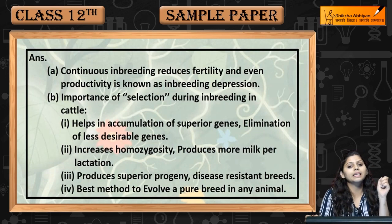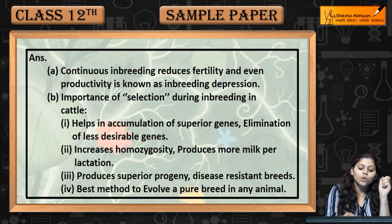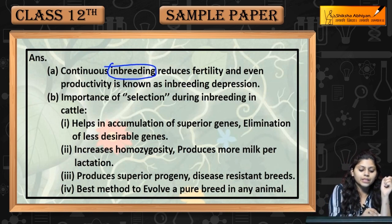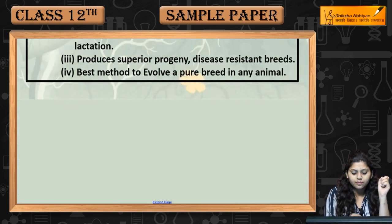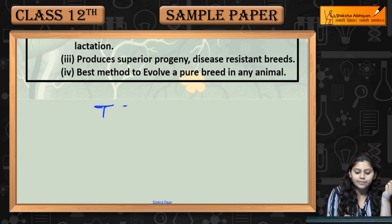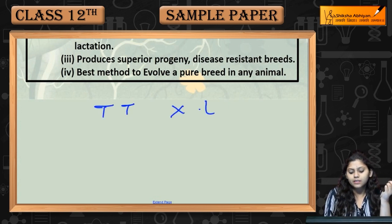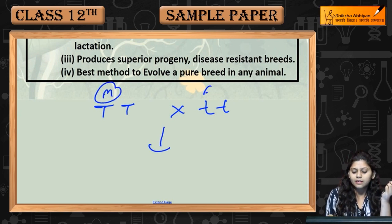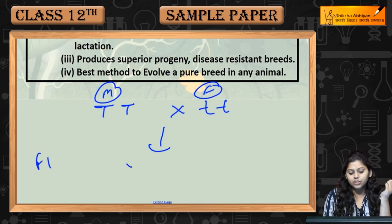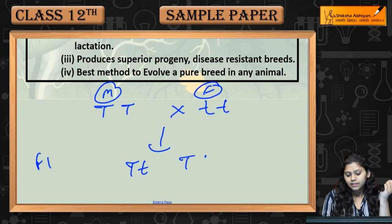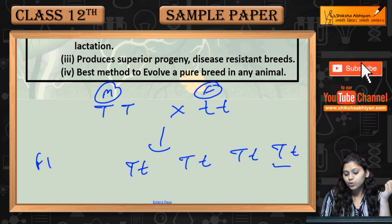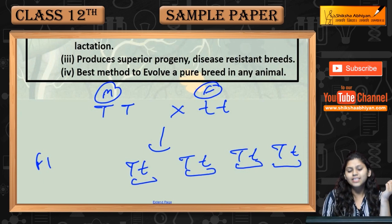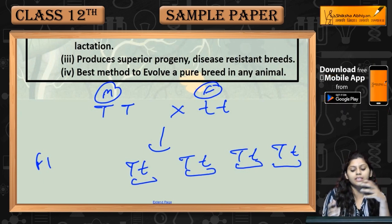What is inbreeding depression? Consider two parents with genotype tt. This male and this female are crossed, and the first generation gives tt, tt, tt, and tt. So all of these are siblings, and the second generation individuals are related.